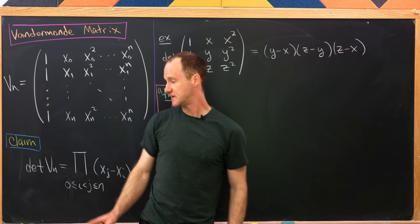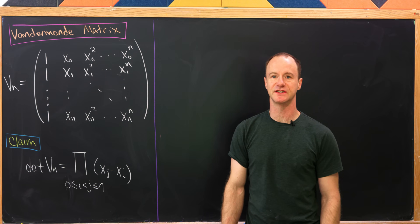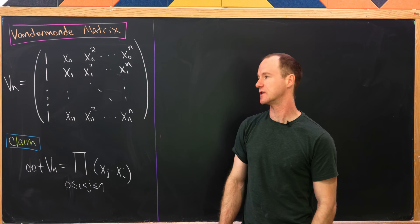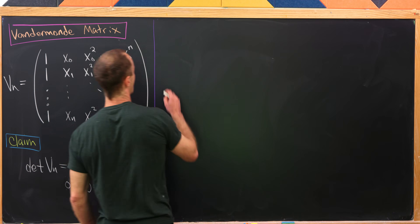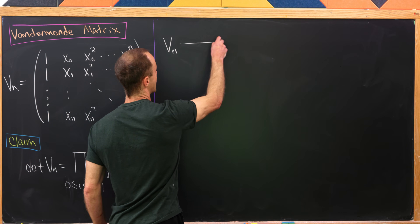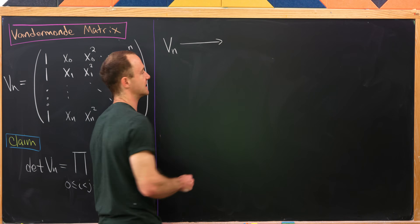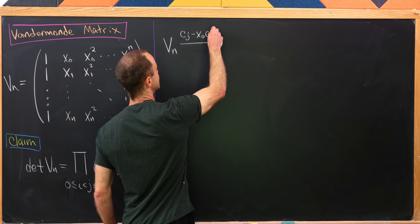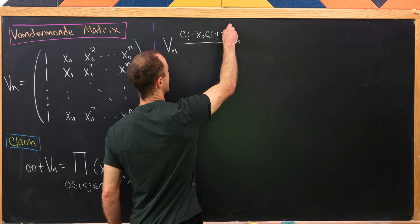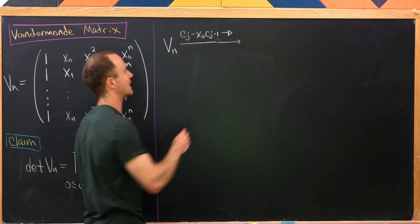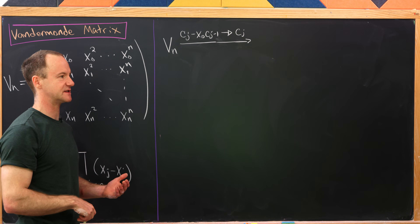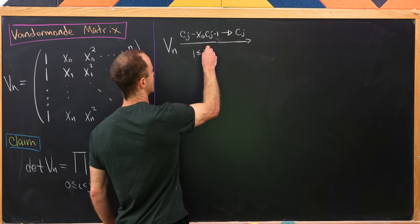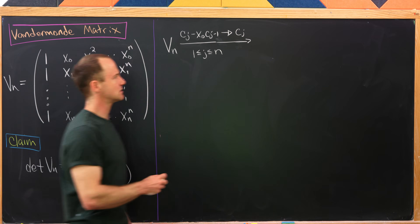Now let's prove this general formula for the determinant. We'll calculate it by doing row and column operations and keeping track of the changes to the determinant after doing those operations. Let's start with some column operations. I'll write Vn here, and apply: cj minus x0 times c_{j-1} becomes the new jth column, for all j between 1 and n. Let's see what that leaves us with.